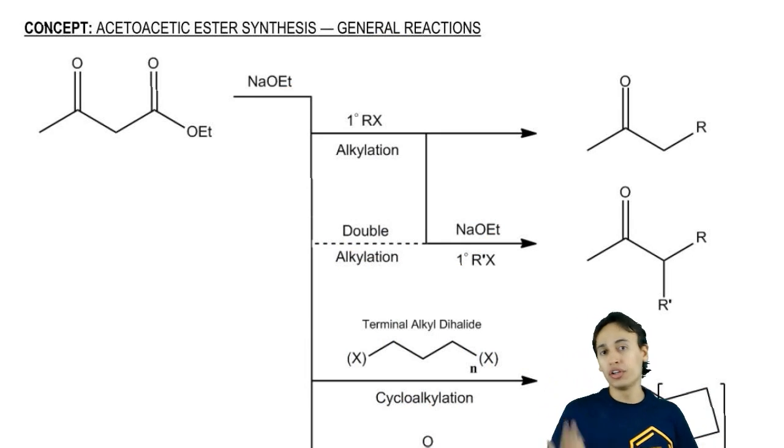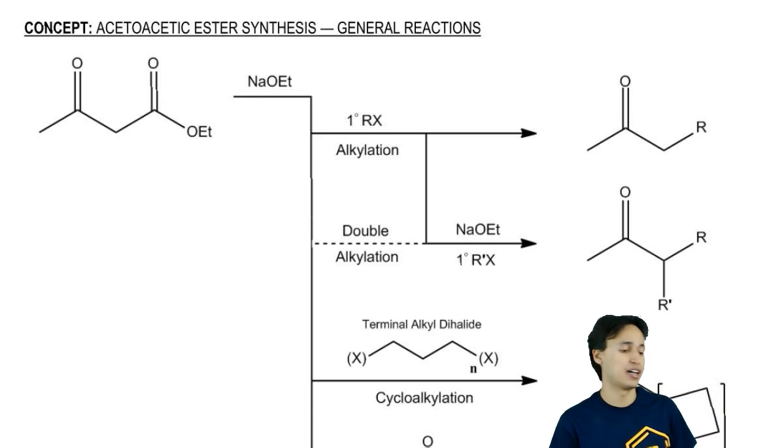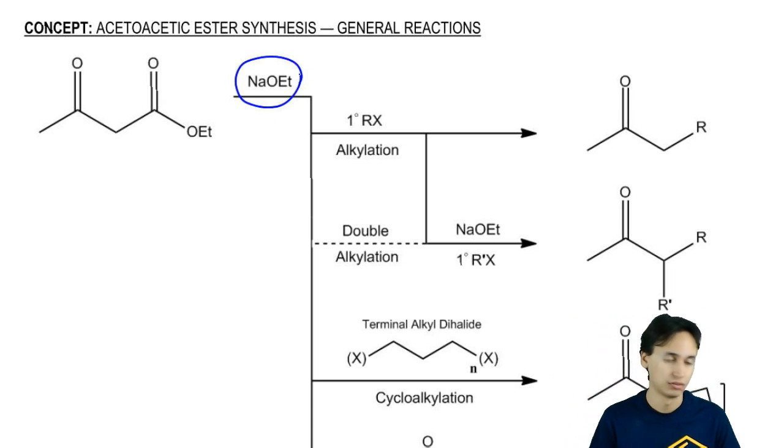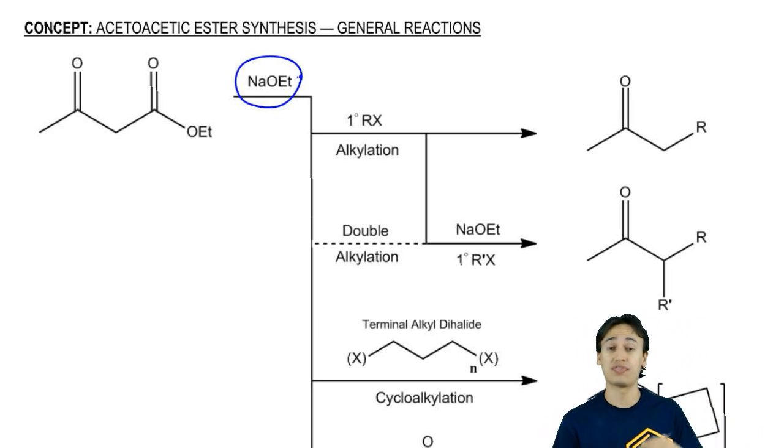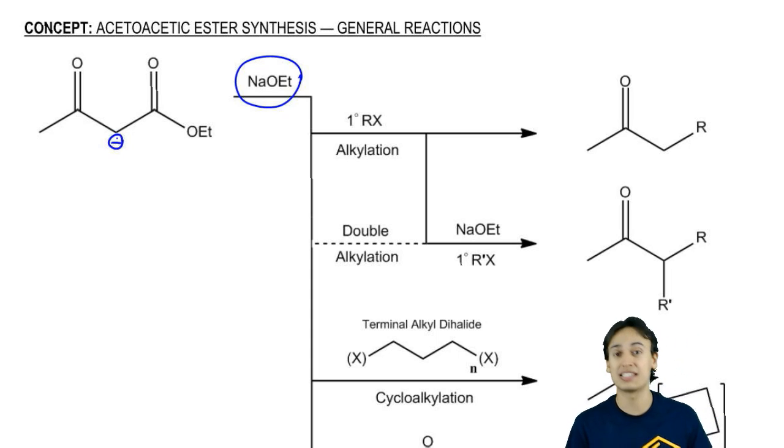This is like your cheat sheet for all the different reactions that you can do with acetoacetic ester synthesis. The first step for all of these is always going to be deprotonation formation of an enolate. That enolate is going to selectively form right here because that's the easiest proton to pull off. Remember, it's the most acidic.